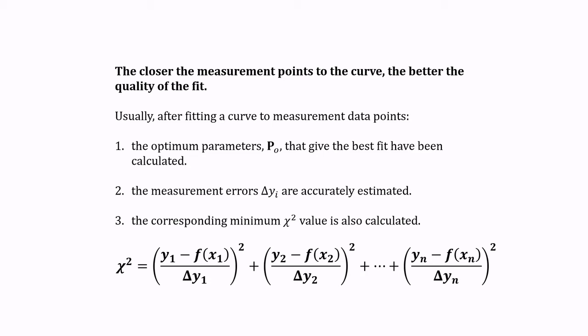Imagine if we repeat the same experiment for many times. Of course, we will get different sets of experimental data. Thus, the experimental data points X and Y will fluctuate due to the random error. The corresponding values of chi squared obtained from all of these repeated experiments will fluctuate too.